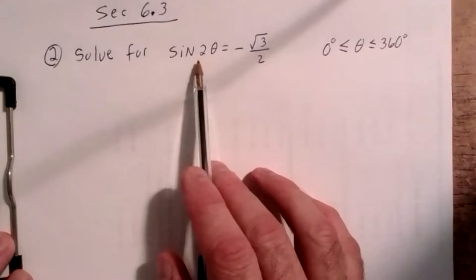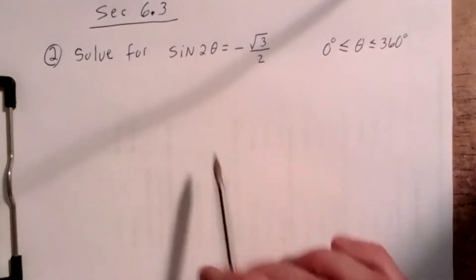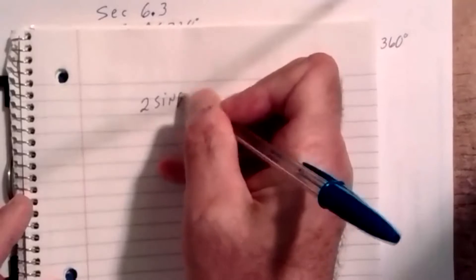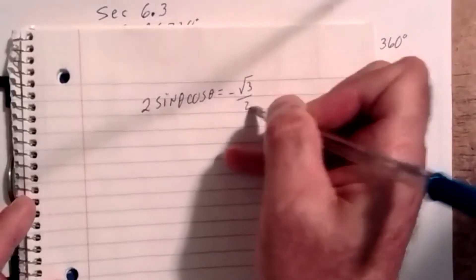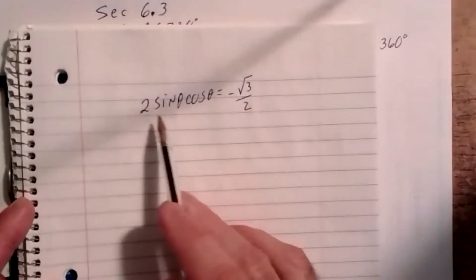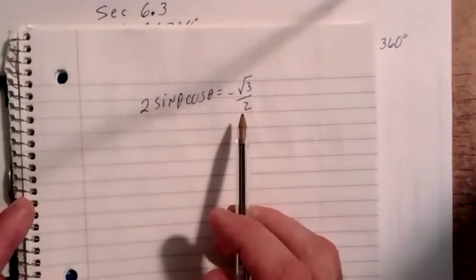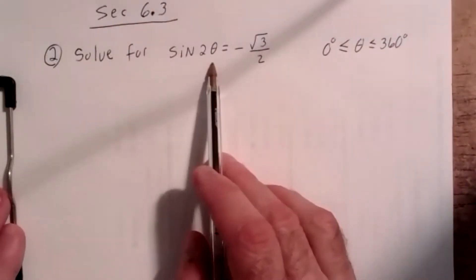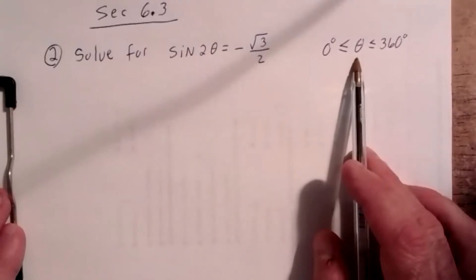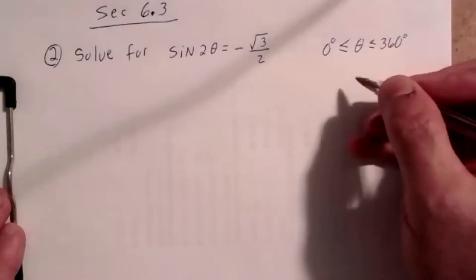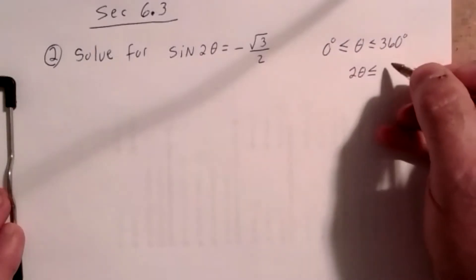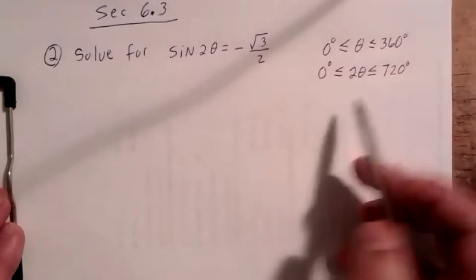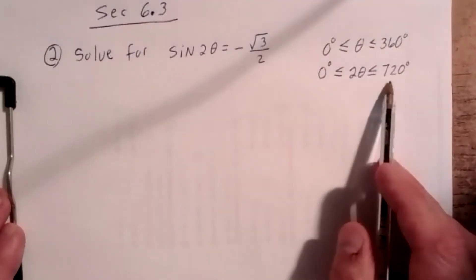What's even more disconcerting is that if I were to replace sine 2θ with its double angle identity equivalent form of 2 sine θ cosine θ, that would make this problem even more miserable. So instead, we realize that if theta lies between 0 and 360, then 2 theta must lie on the expanded interval from 0 to 720 degrees.